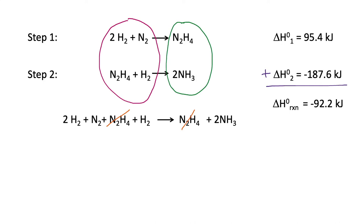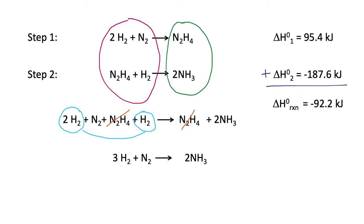We also have two hydrogens and a hydrogen, so we can combine those to get three hydrogens and a nitrogen, giving us two NH3. So we've added up the steps of the reaction and added up the enthalpy of the steps—we have the overall net reaction and the overall enthalpy. That's how we use Hess's law in a multi-step reaction.